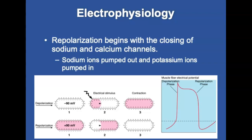Repolarization begins with the closing of the sodium and calcium channels to stop the inflow of these ions. Potassium channels open to allow the escape of potassium ions to help restore a negative charge to the inside of the cell. Sodium ions are pumped out and potassium ions are pumped back into the cell, reestablishing the proper electrolyte distribution. After the potassium channels close, the sodium-potassium pump helps move sodium and potassium ions back to their respective locations, which maintains the polarity of the cell membrane.